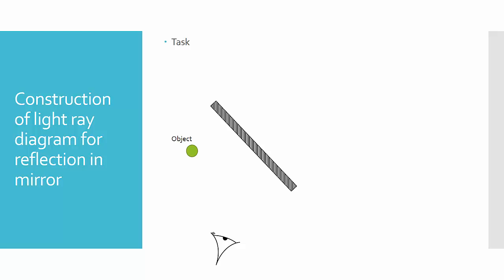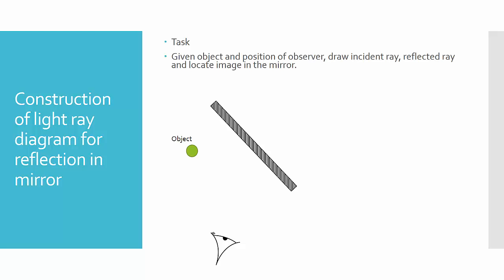The second type of question: the task is, if you are given the object and the position of an observer, draw the incident rays and the reflected rays and locate the image in the mirror. You have the object here and the observer here, so you try to draw the incident ray. But you'll find that it's quite difficult to draw the incident ray first to strike the mirror, because you do not know where it actually strikes so that it will be reflected to the eye. A shortcut is to draw the image of the object first before you try to draw the incident ray.